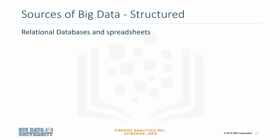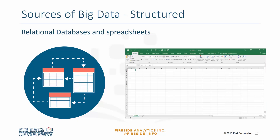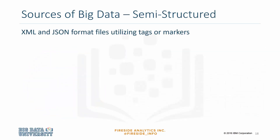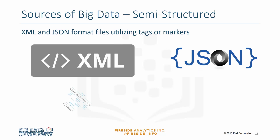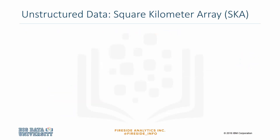Some sources of structured big data are relational databases and spreadsheets. With this type of structure, we know how data is related to other data, what the data means, and the data is easy to query using a programming language like SQL. Some sources of semi-structured big data are XML and JSON files. These sources use tags or other markers to enforce hierarchies of records and fields within data.